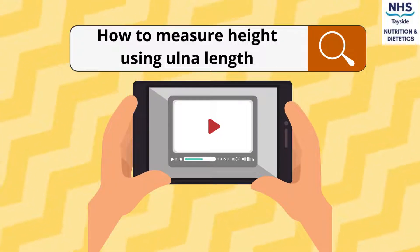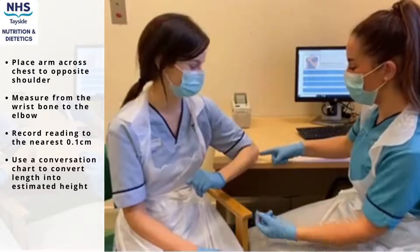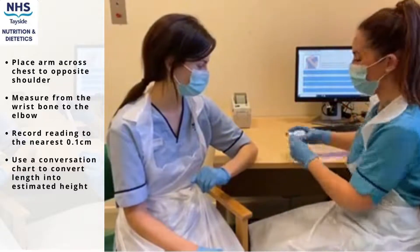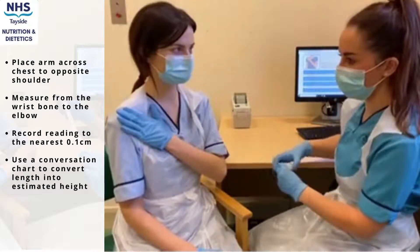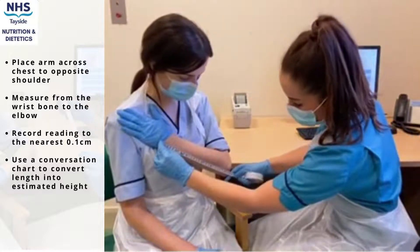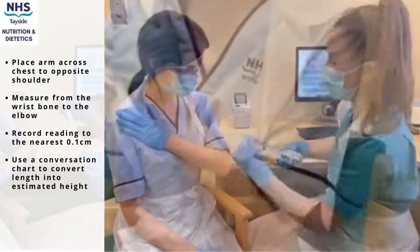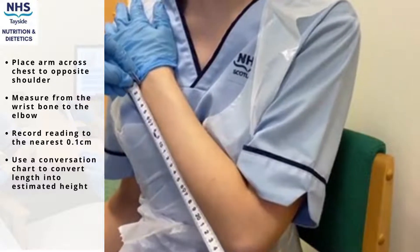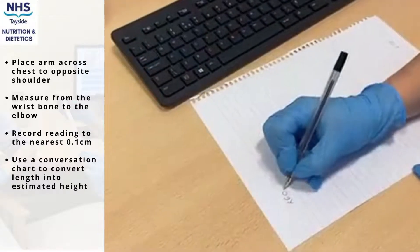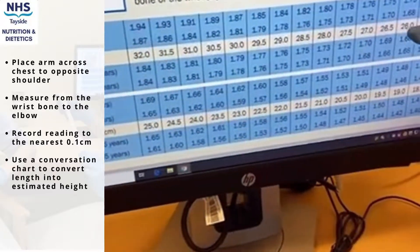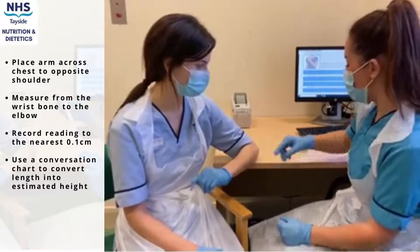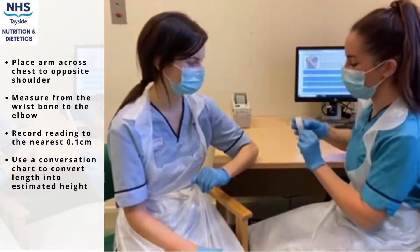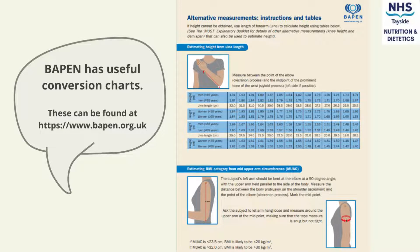Lastly, here is a guide on how to measure height using ulna length. This method can be used as an alternative to standing height if a person is bed-bound or unsteady on their feet. Ask the person to place their arm across their chest with their hand touching the opposite shoulder. Measure from the wrist bone to the tip of the elbow and record to the nearest 0.1 cm. Using the conversion chart — split by gender and age group — convert the length into an estimated height. It should be noted that height was obtained through ulna length. These conversion charts can be found on BAPEN's website.